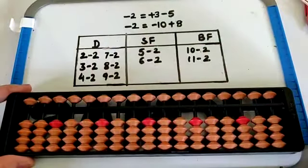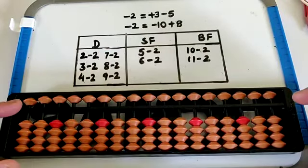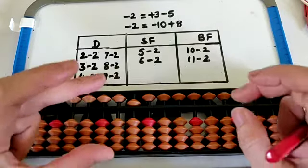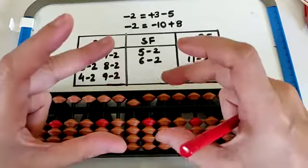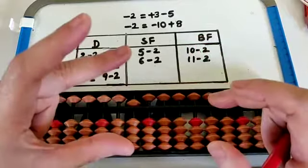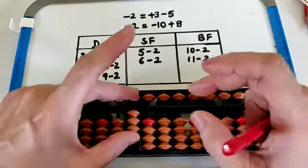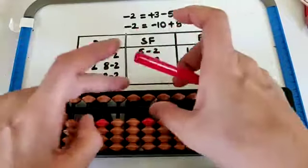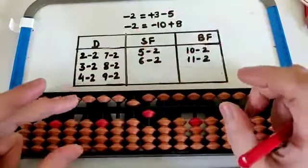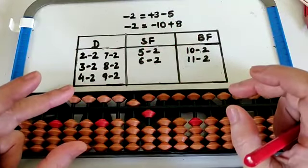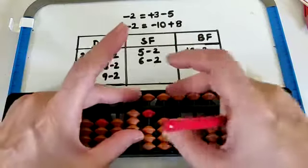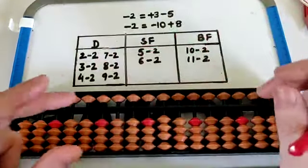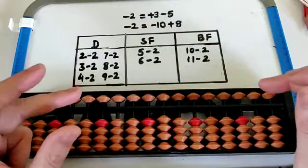Now let's check reverse skipping. 50 minus 2 — minus 2 ke liye hum minus 10 plus 8 karenge. Toh minus 10 ke liye hum reverse skip karayenge. Reverse skip plus 8, that is 48. Set 51 minus 2 — minus 2 again will be 40 up 50 up plus 8, that is 49. Iski fingering hum red bead pointers pe karayenge.